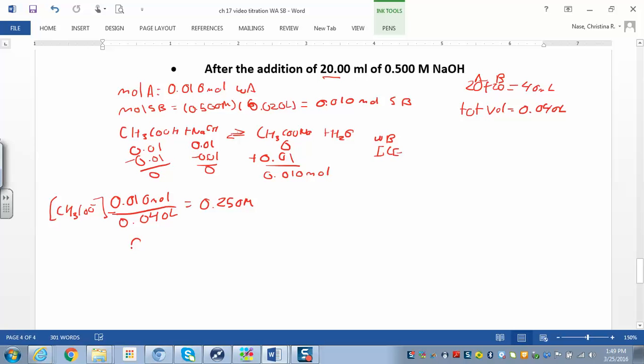And now I can set up an ICE table for this guy. So this is a weak base, right? So I'm going to also need to calculate my KB. I have a base dissociation here. I'm going to get my weak acid and some hydroxide ions. My KB is going to be 1 times 10 to the negative 14 divided by the Ka, which is 1.8 times 10 to the negative 5. So we end up with 5.6 times 10 to the negative 10.